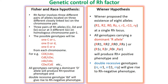According to Weiner's hypothesis, Weiner proposed the existence of eight alleles. The inheritance of the RH blood group is controlled by eight alleles: R1, R2, RO, RZ (dominant), and r, r', r'', ry (recessive), at a single RH locus. All genotypes carrying the dominant R allele will produce RH positive phenotype, whereas the double recessive genotype (small r, small r) will give rise to RH negative phenotype.